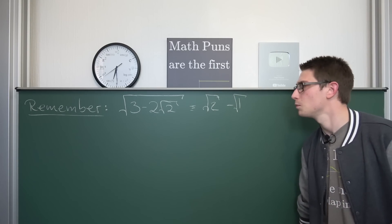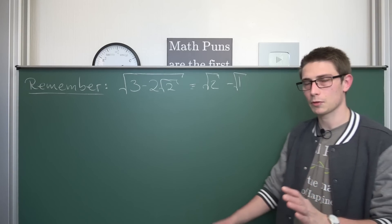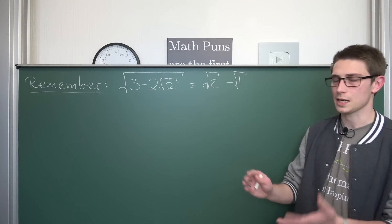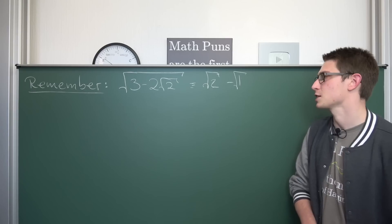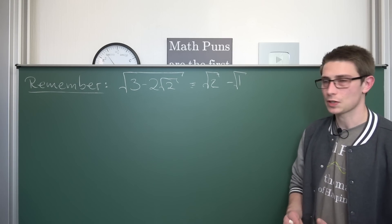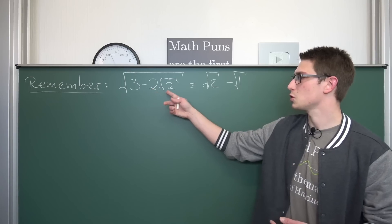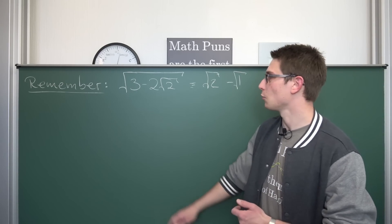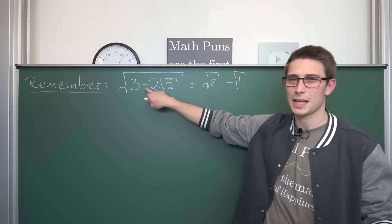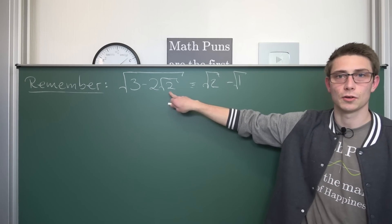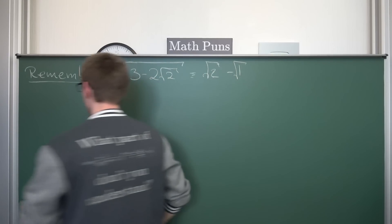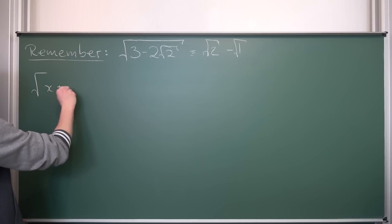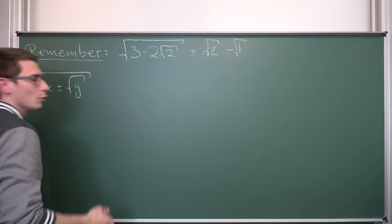First let me give you some motivation. I'm going to tell you which class of radicals we are going to denest, and what assumptions we can take to make our life a bit easier as mathematicians in certain field extensions. We can drag the 2 into the square root of 2, getting the square root of 8. So we are going to deal with a class of radicals of the form square root of x plus or minus the square root of y, where x and y are both rational numbers.